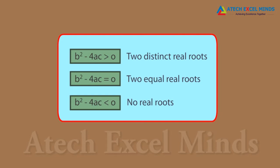If b² − 4ac > 0, there are two distinct real roots. If b² − 4ac = 0, there are two equal real roots. If b² − 4ac < 0, there are no real roots.